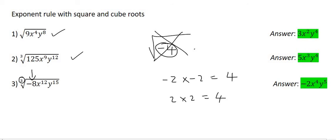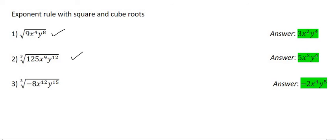Because what times what times what gives us negative 8? That's minus 2 times minus 2 times minus 2. Because minus 2 times minus 2 is 4, and 4 times minus 2 is minus 8. So you just don't want to have a negative inside a square root, but you can have it inside a cube root. And so we said that minus 2 times minus 2 times minus 2 gives us minus 8. This 12, we're going to divide that by 3, and that's going to give us x to the power of 4. And then this 15, we're going to divide by 3, and that's going to give us y to the power of 5.